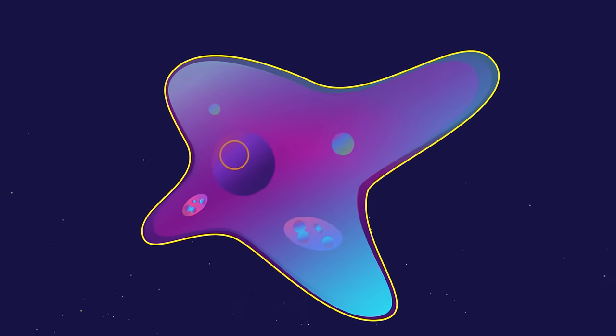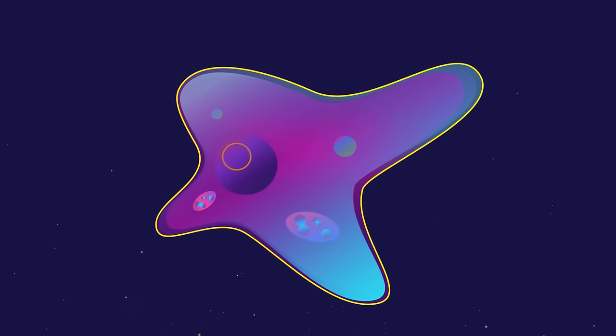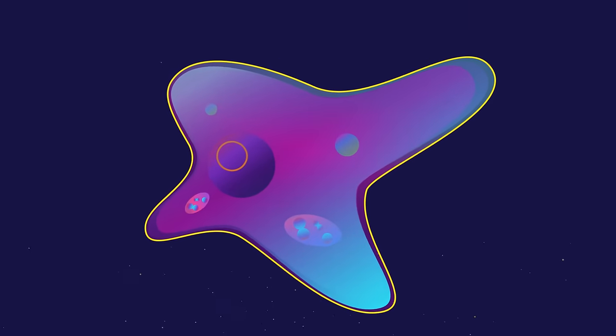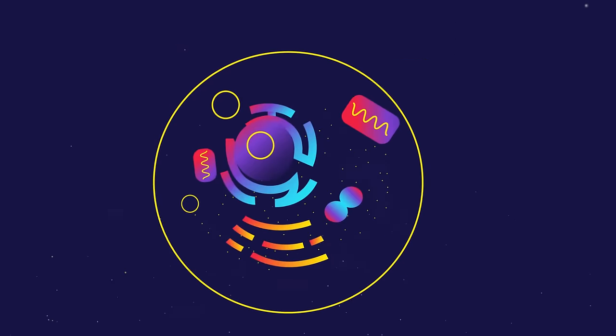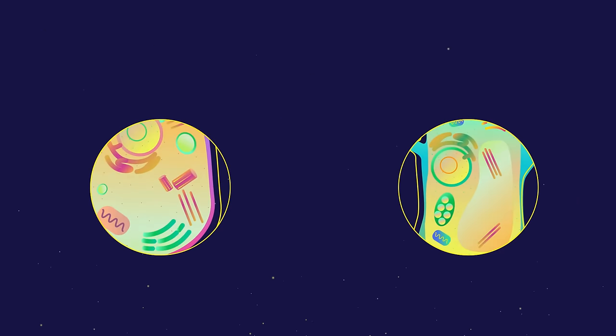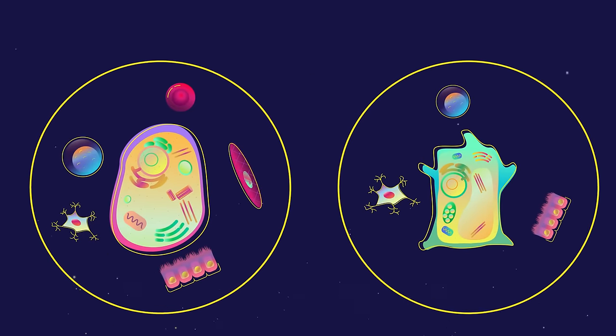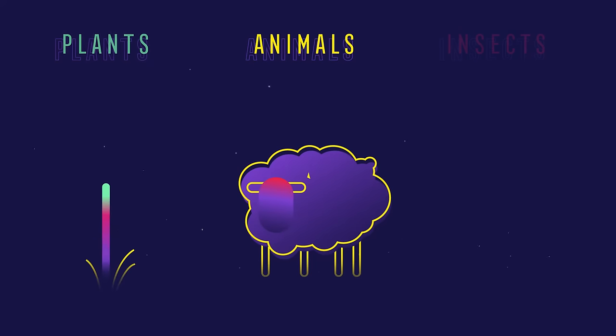Sometimes cells can exist on their own, such as a simple bacterium or a single-celled organism called an amoeba. But mostly, cells work together to form more complex multicellular organisms, such as animals, plants, and insects.